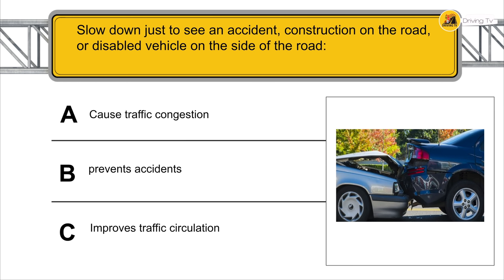Slowing down just to see an accident, construction on the road, or a disabled vehicle on the side of the road — all cause traffic congestion.